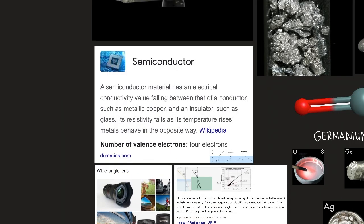Germanium is a semiconductor. A semiconductor material has an electrical conductivity value falling between that of a conductor such as metallic copper and an insulator such as glass. Its resistivity falls as its temperature rises. Metals behave in the opposite way, according to Wikipedia. The number of valence electrons of semiconductors are four. So germanium is a semiconductor.